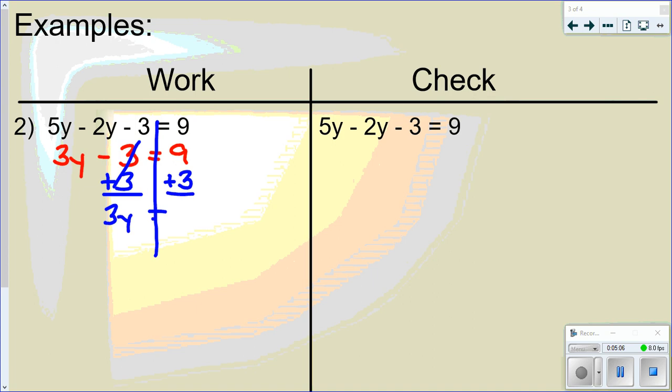Leaves me with 3y equals 12. So now I see multiplication. Do division. Divide by 3 and divide by 3. And I get y equals 4.